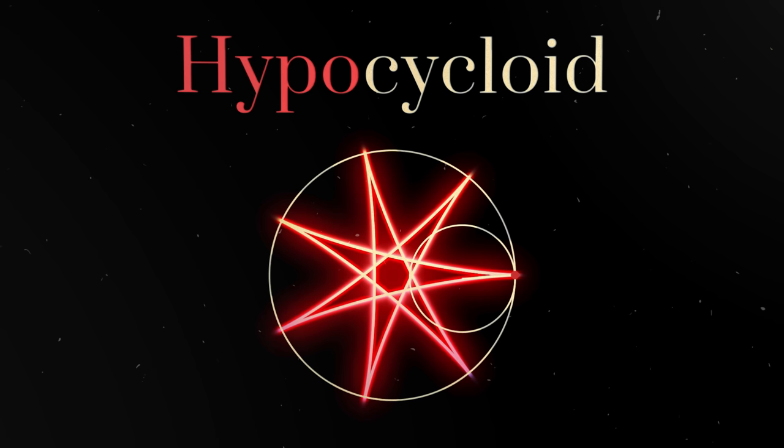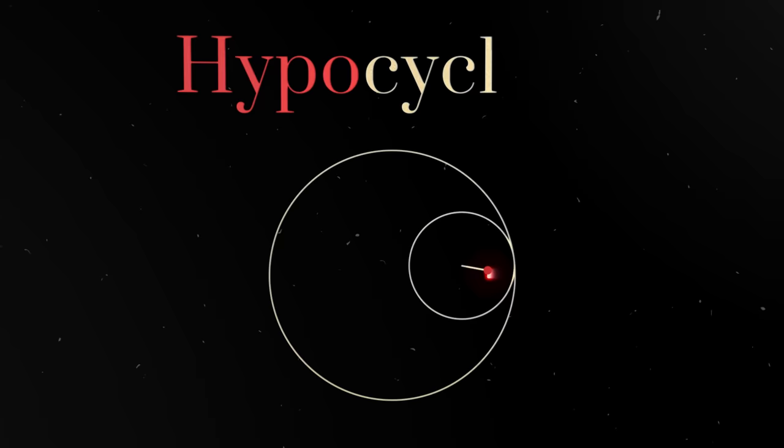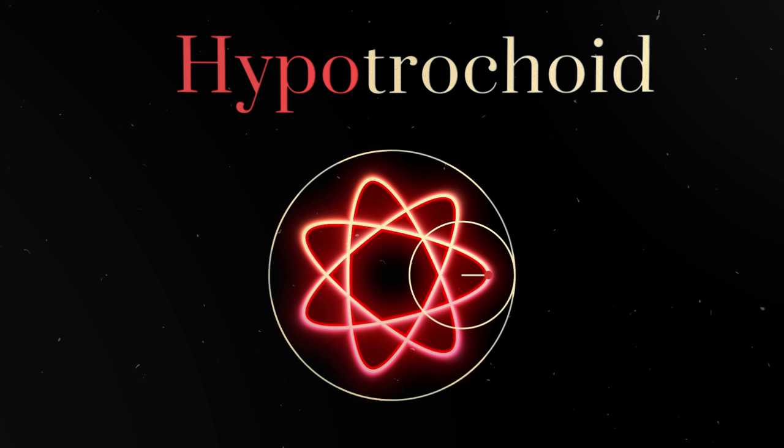However, the holes in a wheel are different distances from the center. So I will move the drawing point closer to the center and we will get a hypotrochoid. This is what the spirograph draws.